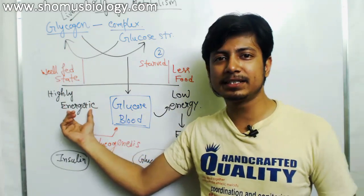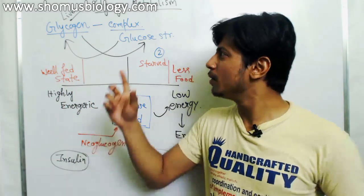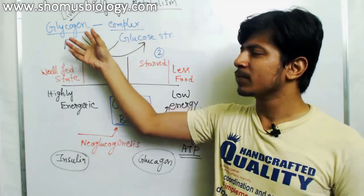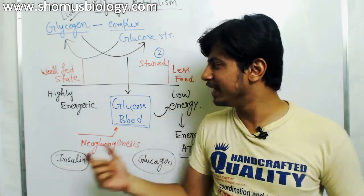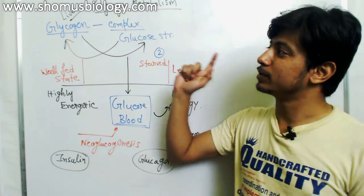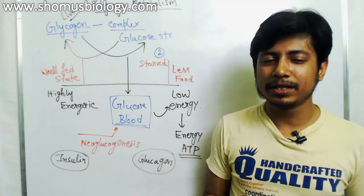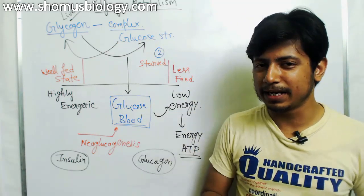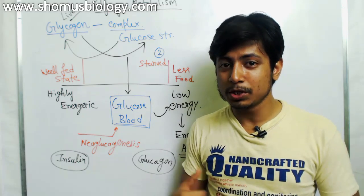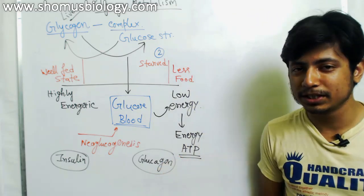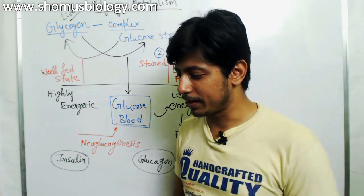Normally, in the highly energetic state when you have excess glucose, we convert it into glycogen and store it. Then in the low energetic state, we utilize the stored glycogen by breaking it down to produce glucose molecules so that our body can replenish the energy it requires.